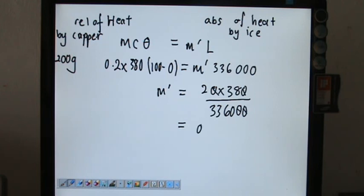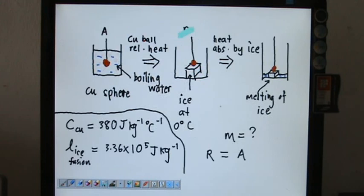So definitely in the end you get 0.023 kg of ice which will be melted. Meaning maybe there are some ice which has not been melted yet like this in this case. You see here.